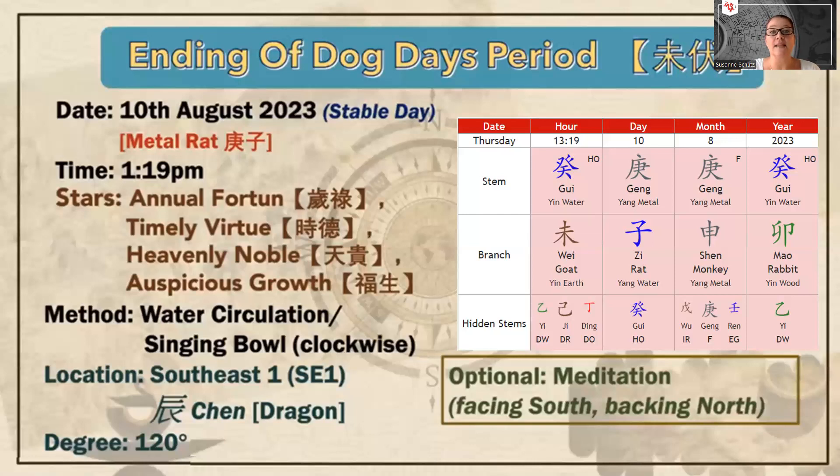So the date that you need to mark for the end of the Dog Days period is on the 10th of August, and we are looking at 1:19 p.m. for our activation. There are two things that you can do. It's a two-part activation.